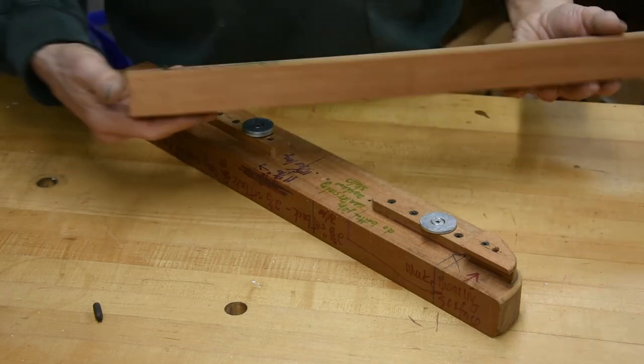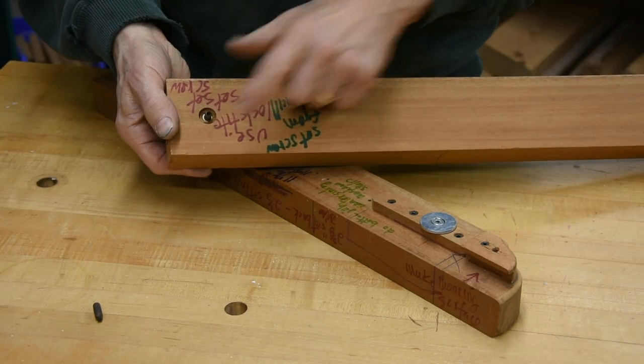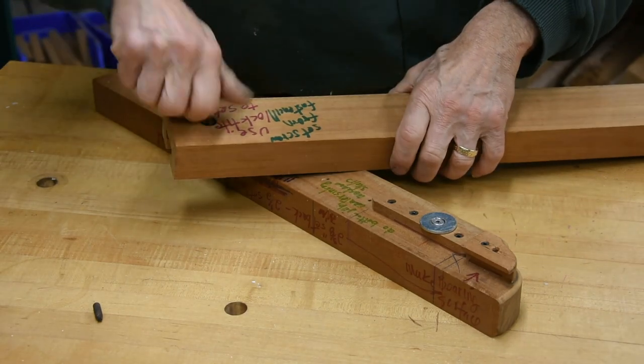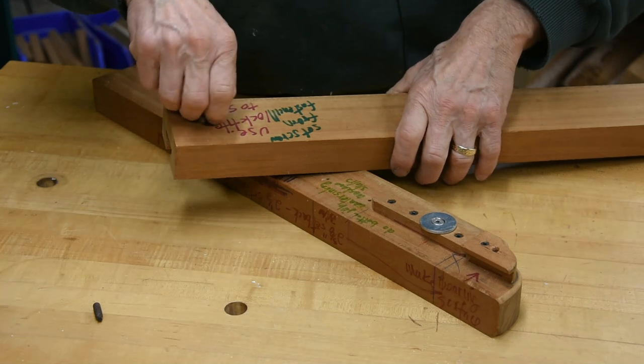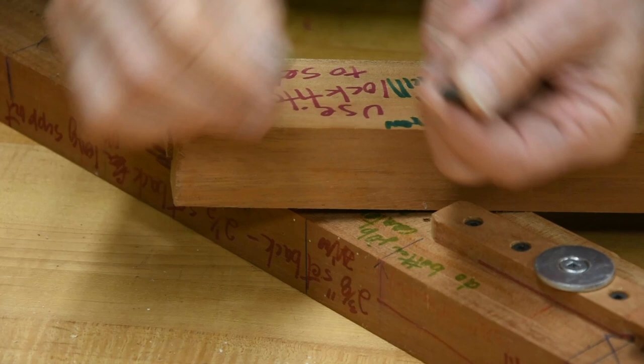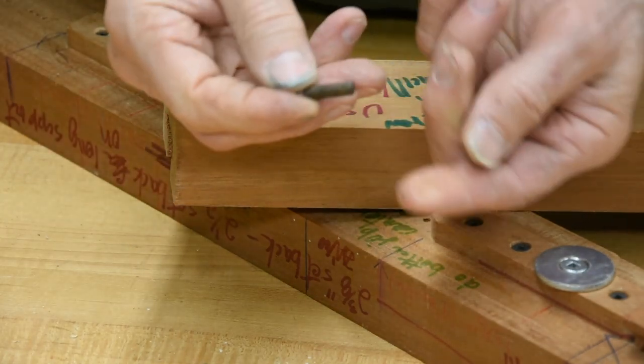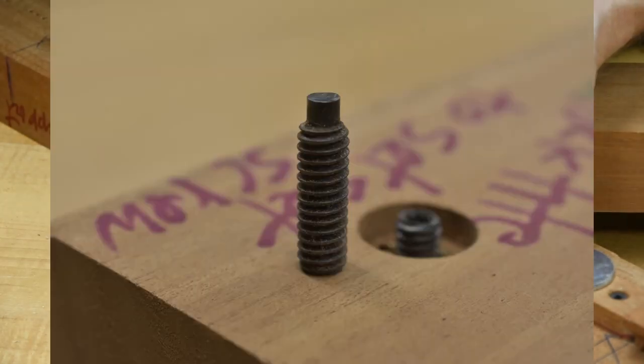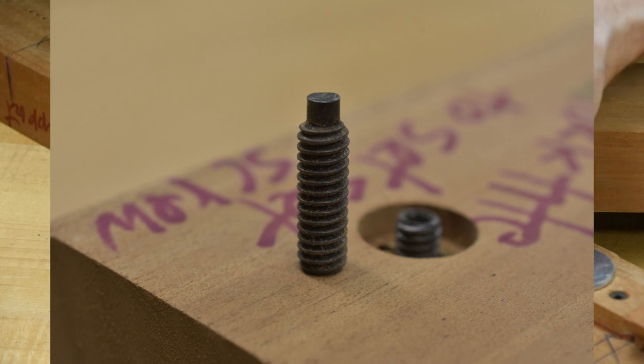Now one thing that I did that was different is this right here, this set screw. And this is kind of a special set screw. So as you can see, this set screw has a little post on the end of it where there's no threads.